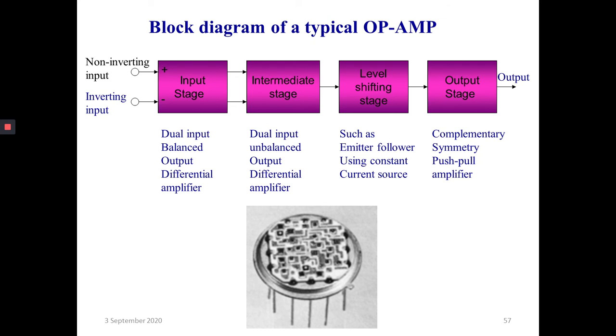The last stage is the output stage. This stage is usually a complementary symmetry push-pull amplifier. It provides low output impedance, increases the voltage sink, and importantly, it raises the current supplying capacity of the OP-AMP.